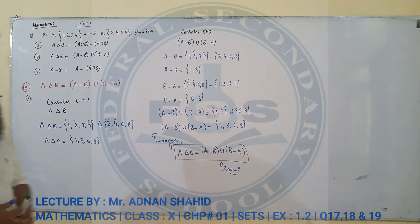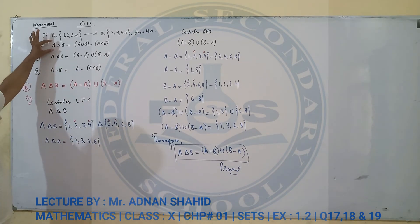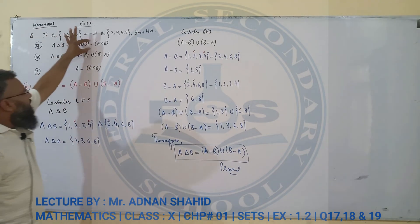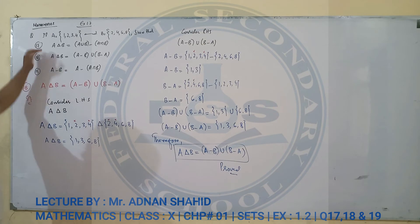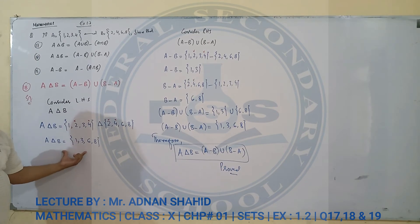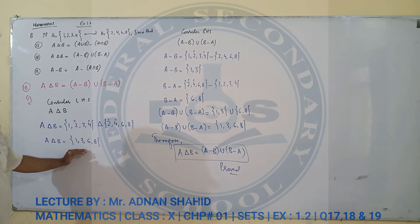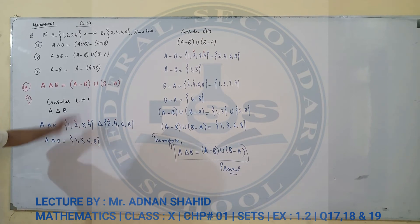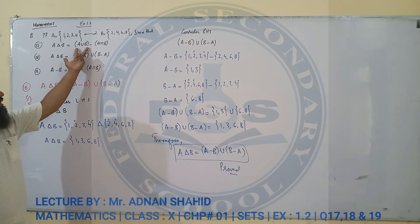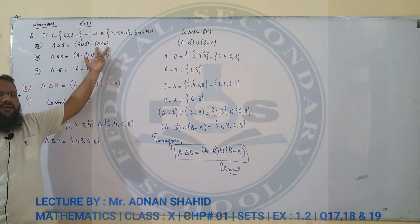बिलकुल इसी तरीके से आपने question number 17 को solve करना है। 17 में कहता है कि साबित करें कि A symmetric difference B बराबर है A union B minus A intersection B के। पहले left hand side उतारनी है, इसी तरीके से हल करनी है। फिर right hand side पर आएंगे — पहले bracket हल करेंगे, union निकालेंगे, फिर intersection B।